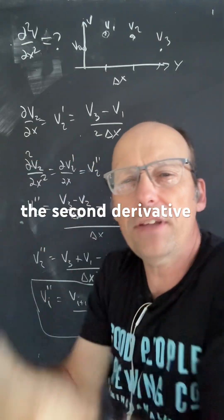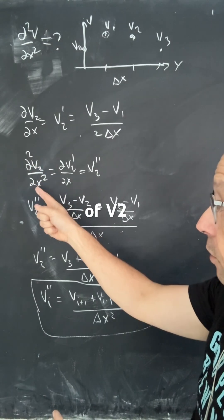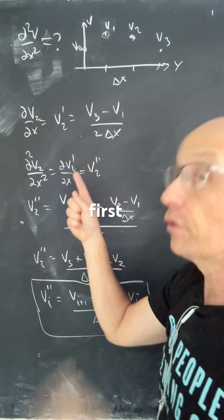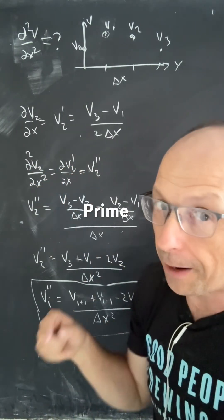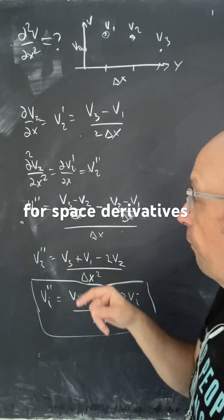Now, if I want to do the second derivative, I'm going to take the derivative of the derivatives, right? So the second derivative of v2 is going to be the first derivative of v2 prime, which is the first derivative. And so I get v2 double prime. That's where we use double prime, we use prime for space derivatives.